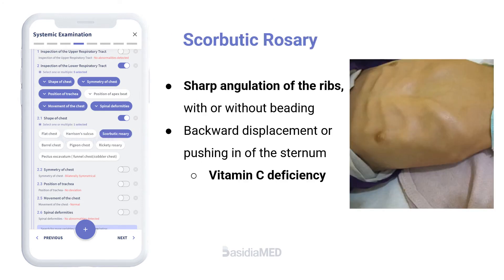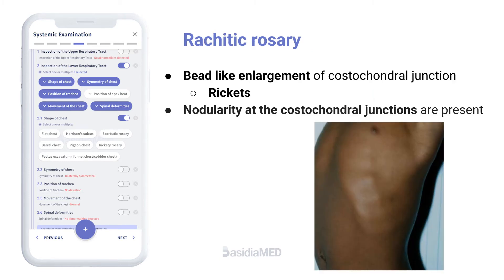Scorbutic rosary is the sharp angulation of the ribs with or without beading or rosary formation, arising as a result of backward displacement or pushing in of the sternum. It is seen in vitamin C deficiency. Rickety rosary is a bead-like enlargement of costochondral junctions seen in rickets.